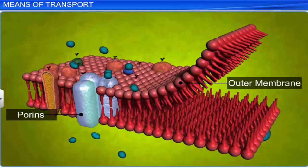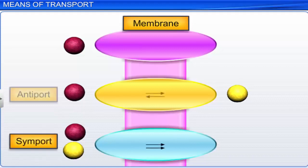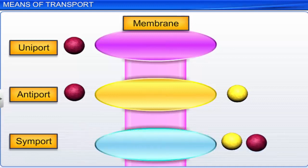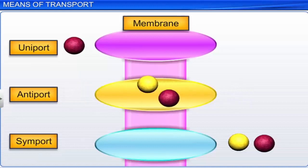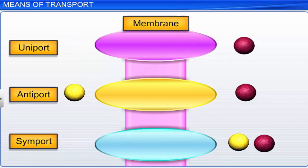The water channels are made up of 8 different kinds of aquaporins. Some transport proteins allow diffusion of two different types of molecules required to be transported. Based on direction, transport of molecules can be differentiated into three types: symport, antiport, and uniport. Both molecules cross the membrane in the same direction in a symport, while they move in opposite directions in an antiport. In uniport, a single molecule diffuses across a membrane, independent of other molecules.